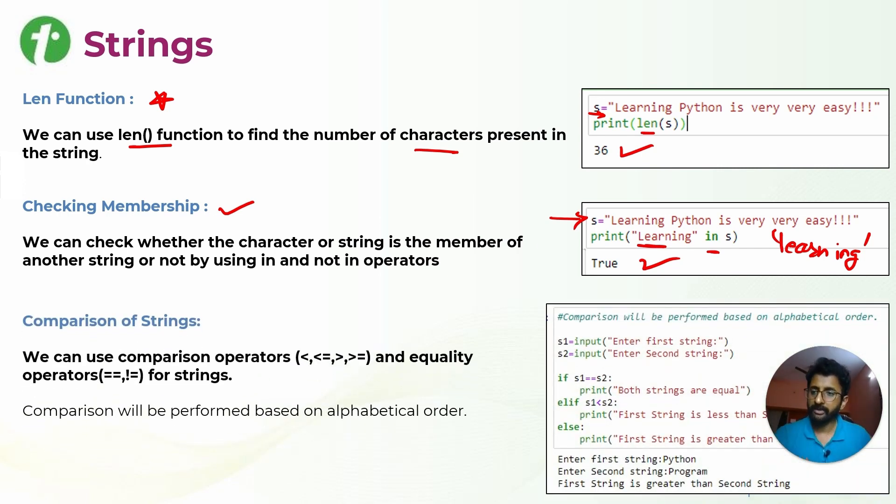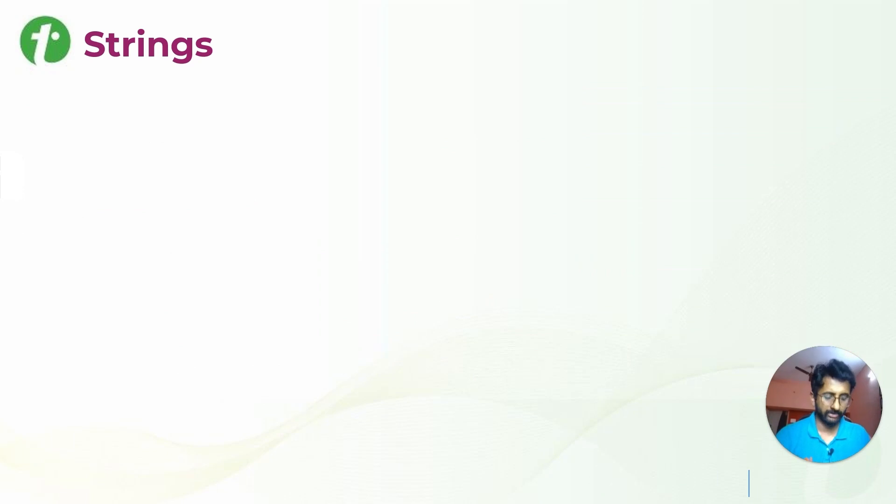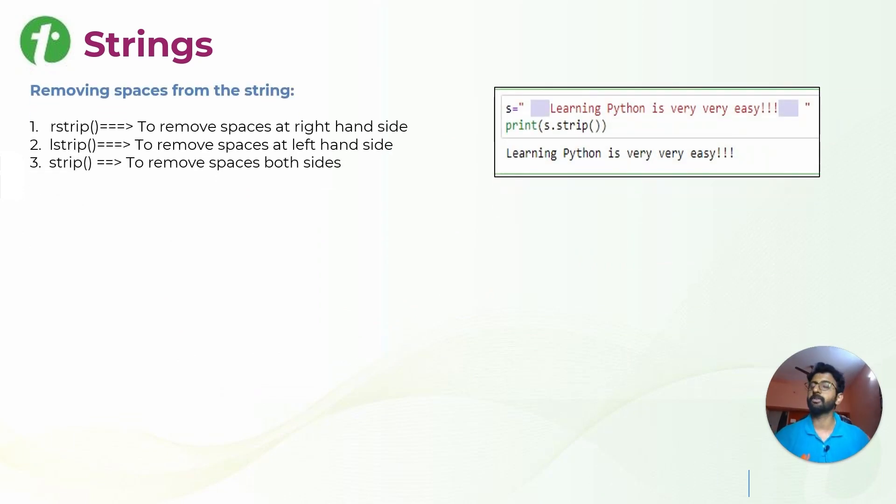We also have comparison of strings. We can compare two strings, s1 and s2. How these comparisons are performed? It will check alphabetically which is at the greater place. For example, Y will be greater than T, Z will be greater than A. Accordingly, the comparison operations are performed.